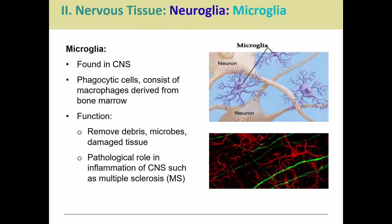The last neuroglia in the central nervous system is the microglia. These are going to be protective — they are phagocytic, meaning they engulf pathogens and things that are not supposed to be there. These come from macrophages from the bone marrow, and their whole job is to remove debris, microbes, and any sort of damaged tissue. They do play a role in inflammation in the central nervous system in conditions like multiple sclerosis, but the key thing is knowing their normal phagocytic function.